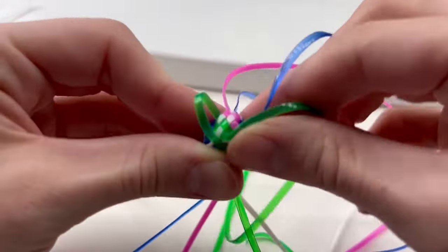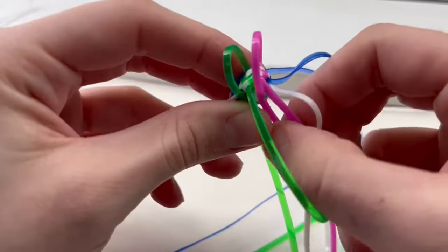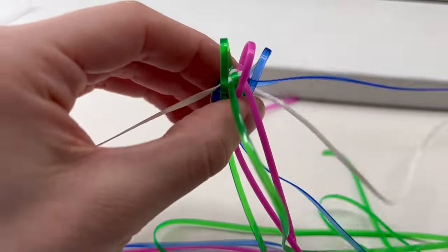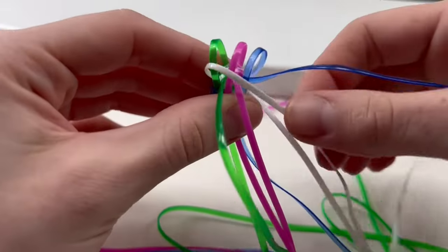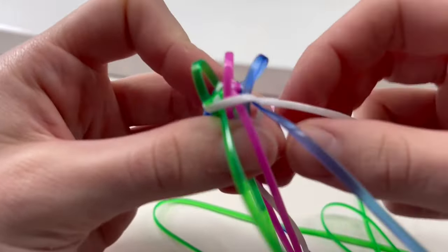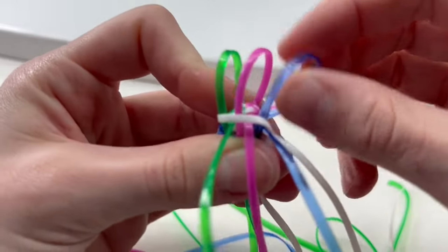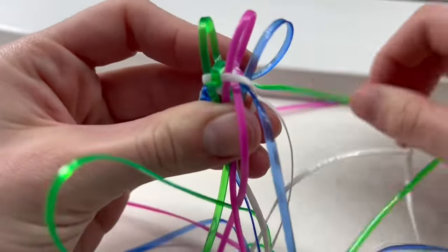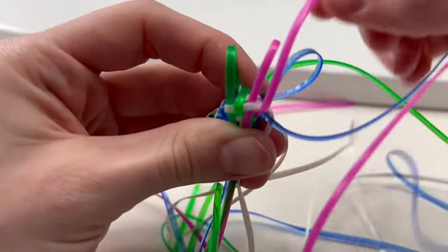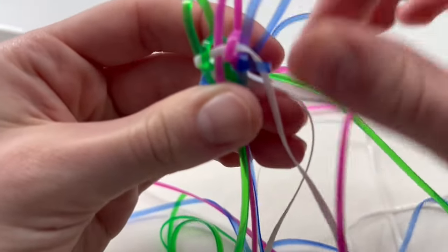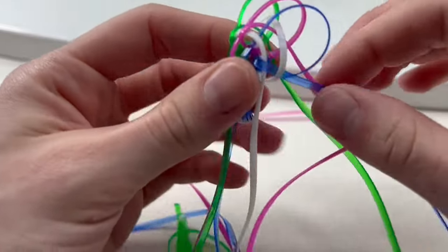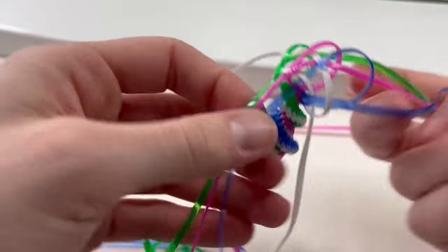So one last time I'm going to show you guys. We're bringing our short strands to the side. Taking the farthest away long strand and just bringing it over and laying it across. Taking our remaining short strands and going in between and over. And of course we're going to just pull tight.